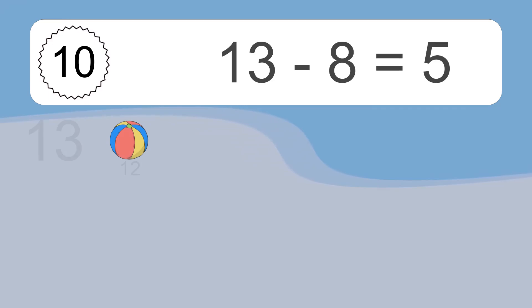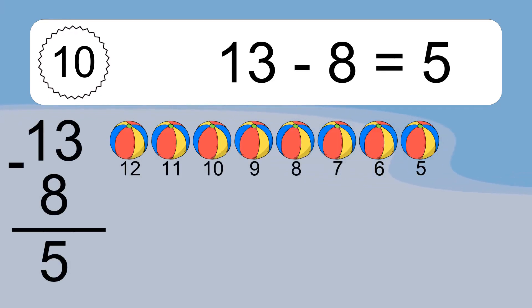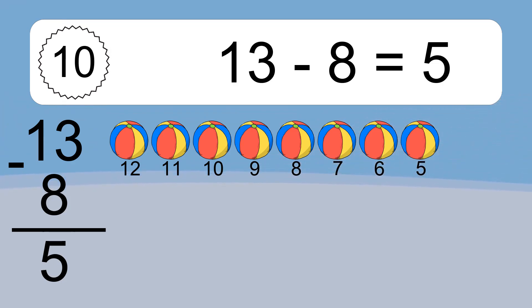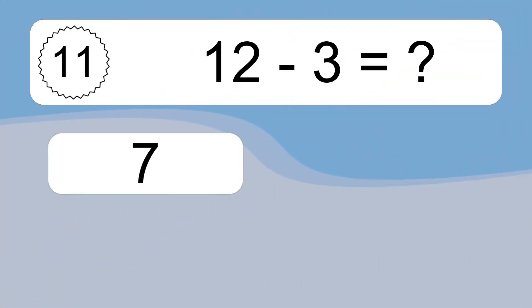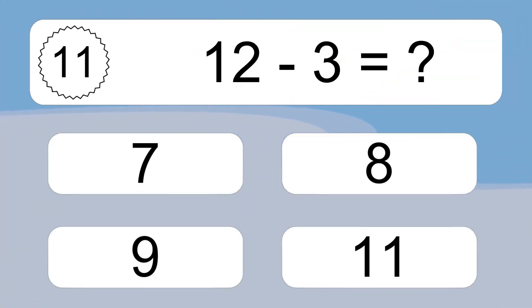13 minus 8 equals what? 13 minus 8 equals 5. Let's count it: 12, 11, 10, 9, 8, 7, 6, 5.